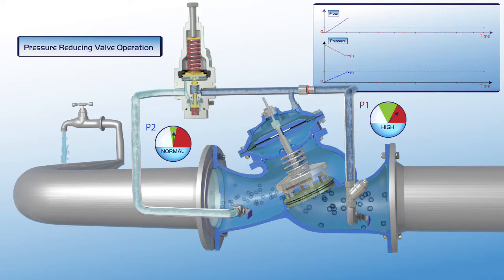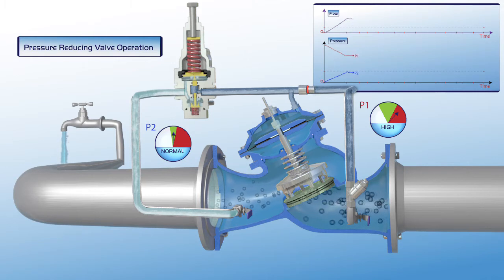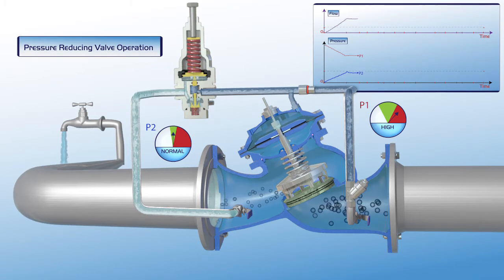As shown on the chart, flow through the valve at this stage is constant, and the P1 upstream pressure is reduced to the required green zone settings of the P2 downstream pressure gauge.